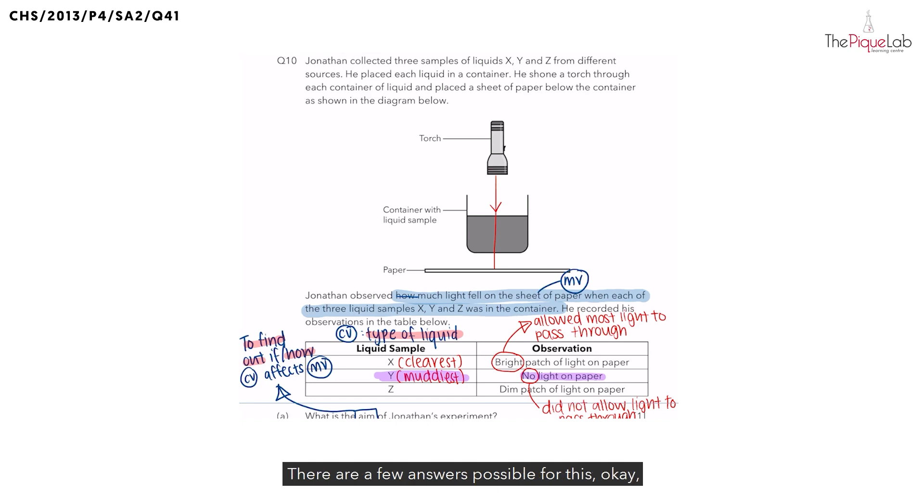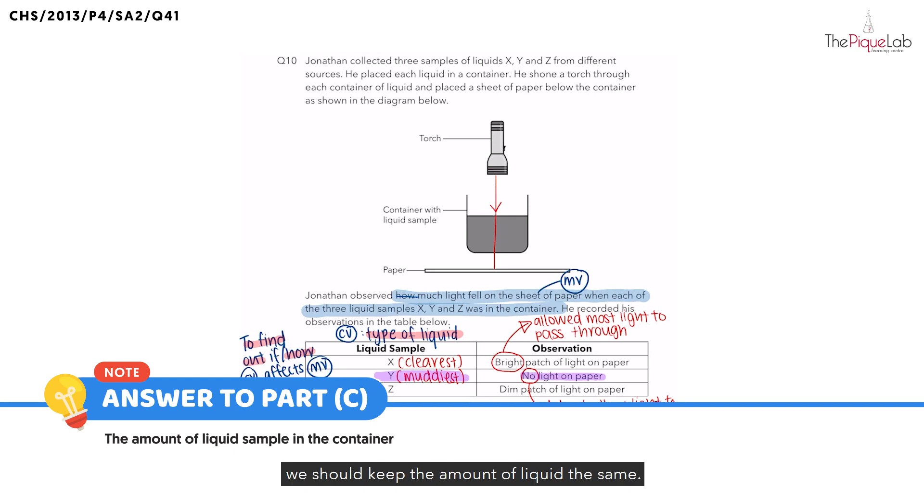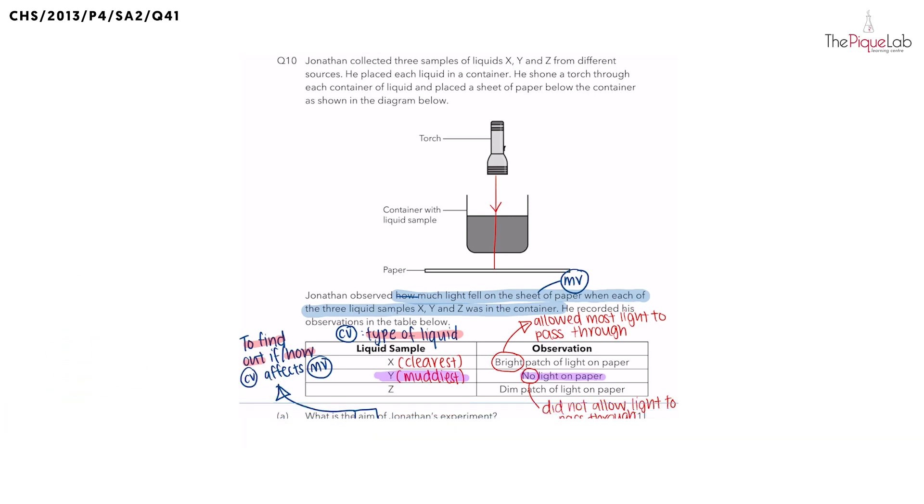There are a few answers possible for this. But the first one would be we should keep the amount of liquid the same. What else? We can also say we need to keep the brightness of the torch the same.